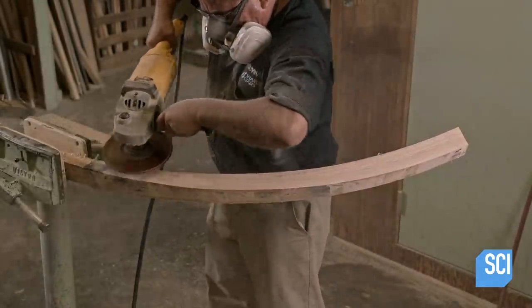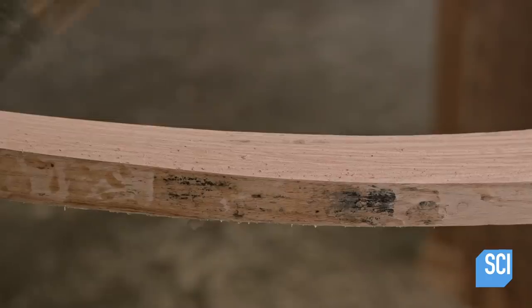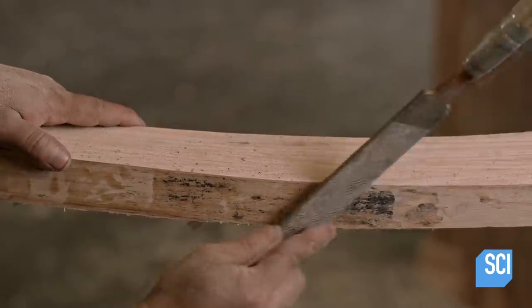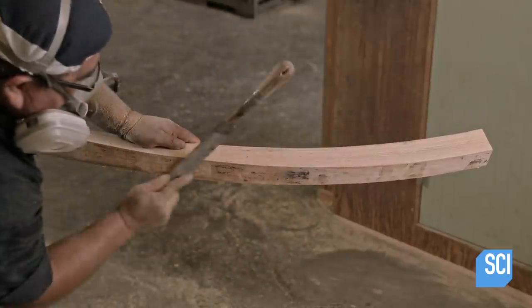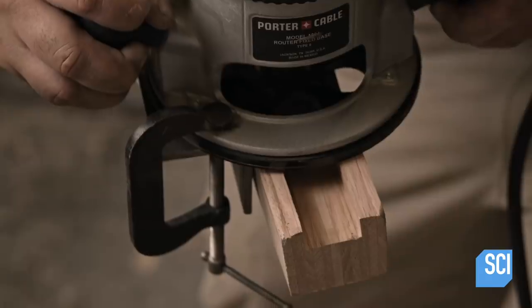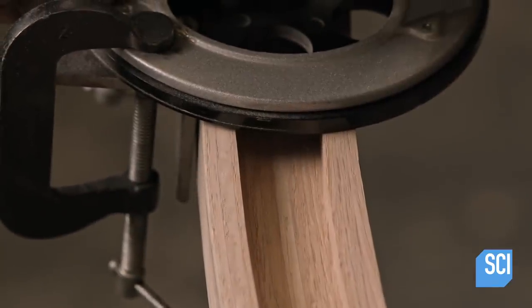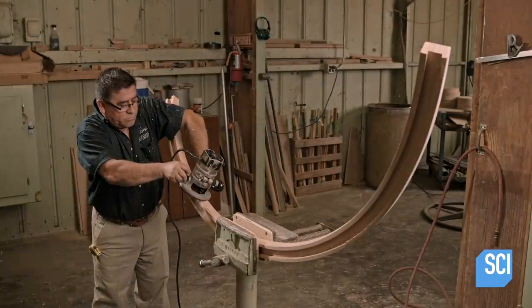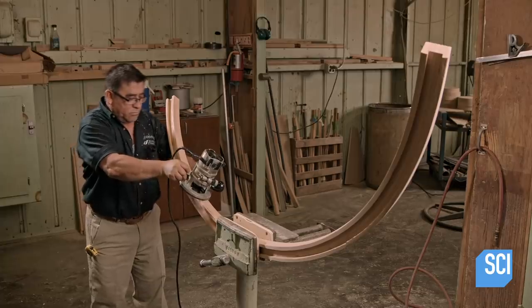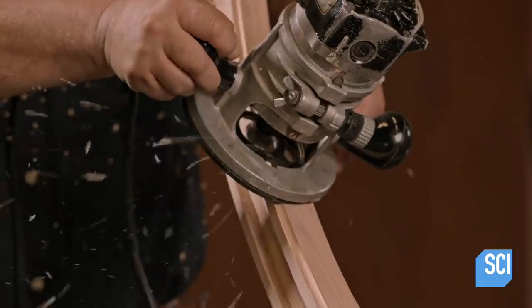After gluing strips of wood together to create a curved railing, he sands the excess adhesive and with a file, removes more of the glue. He turns the railing over and carves a groove in the wood. This will enable the railing to be installed over the metal rail support. He adds some detailing along the edge.